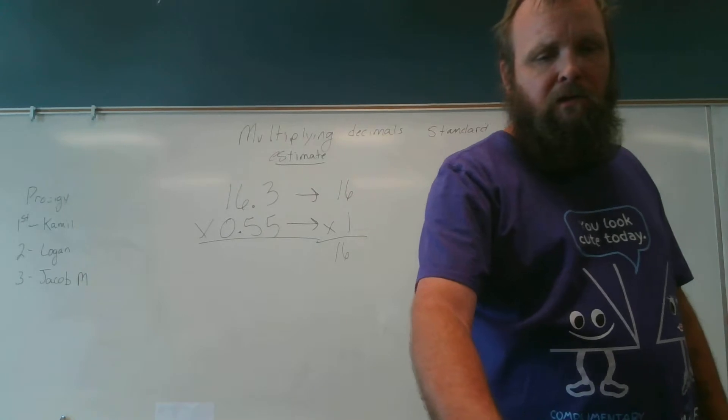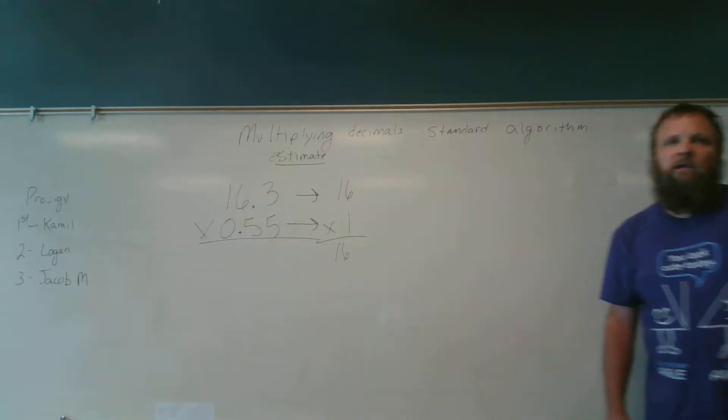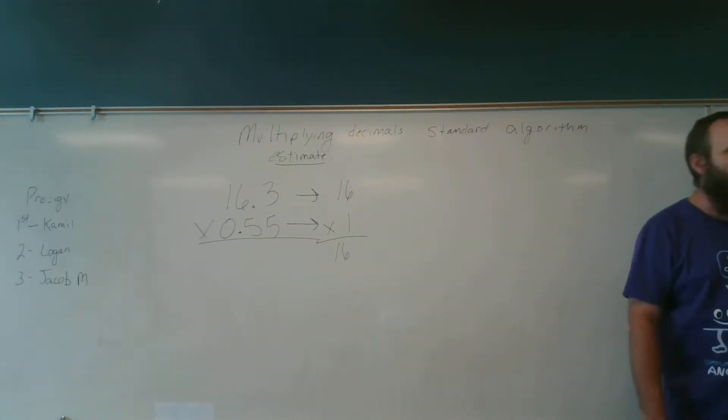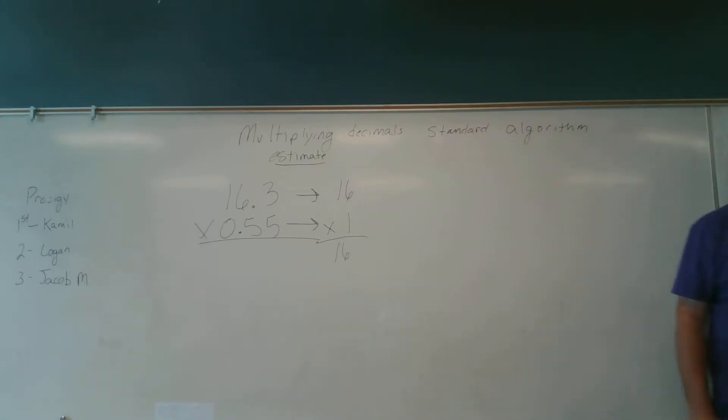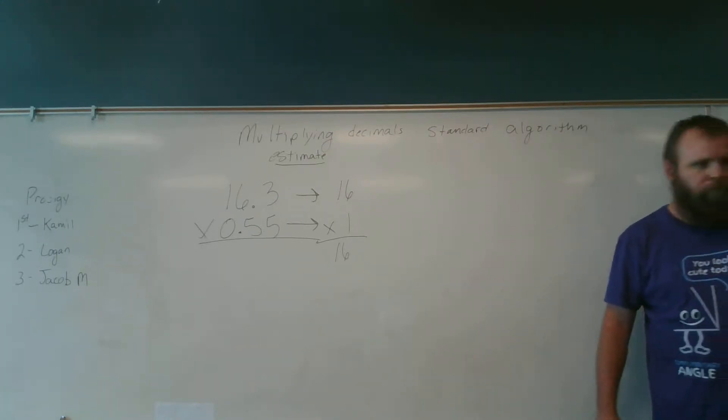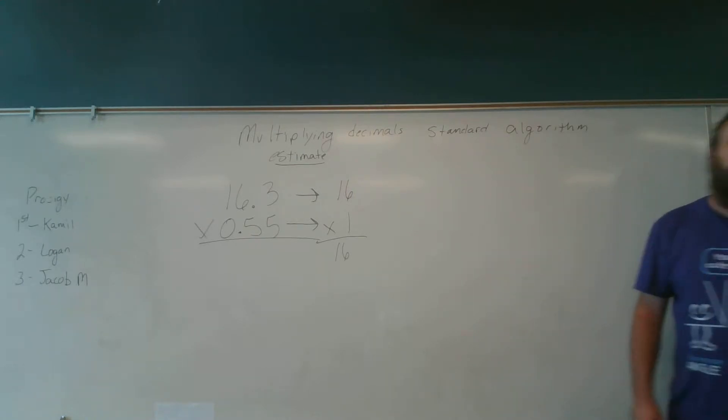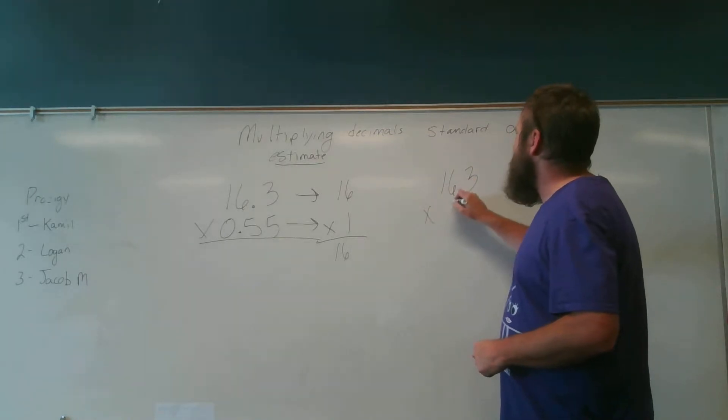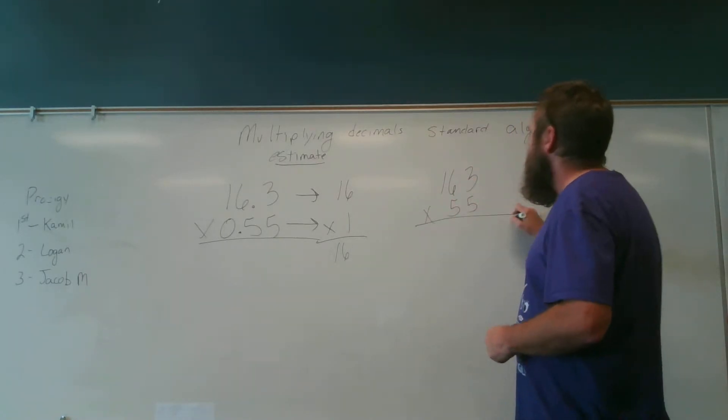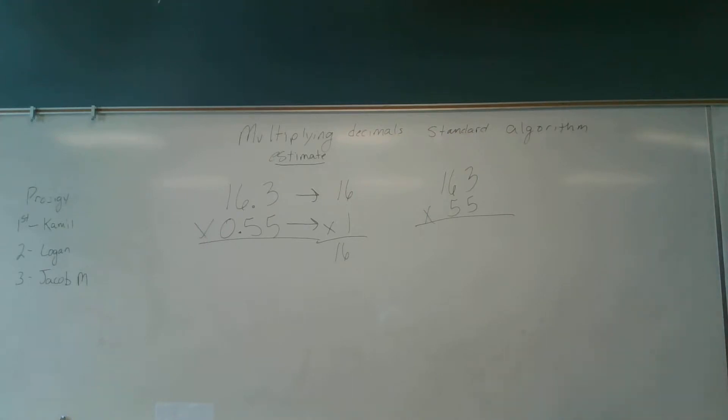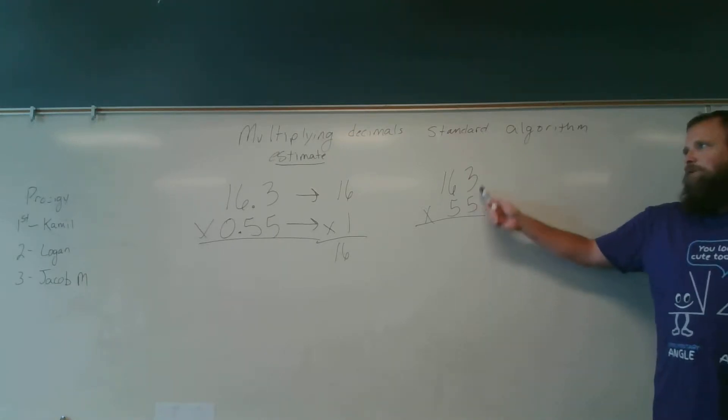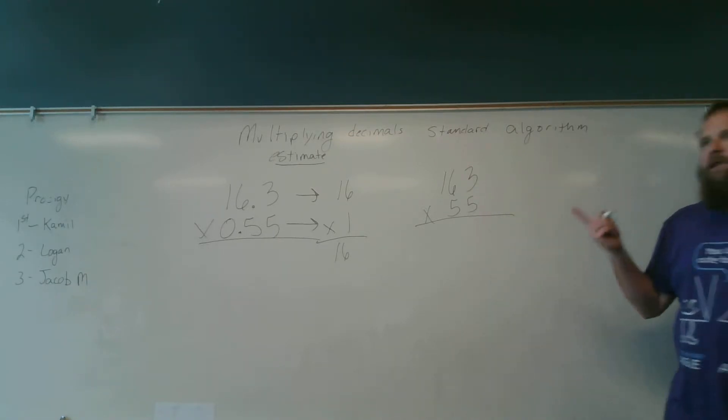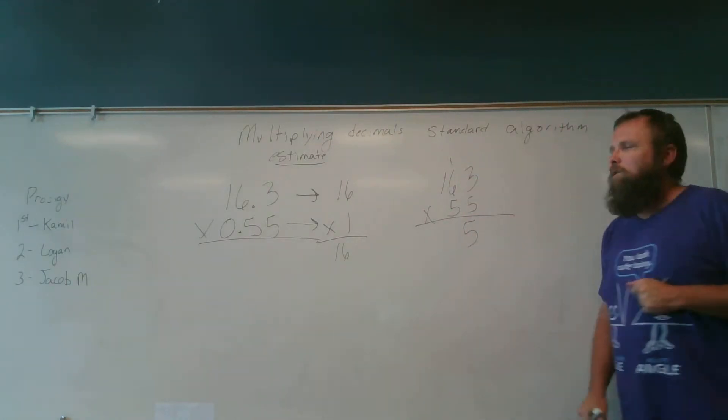Now you still need to do the arithmetic right. Macy, after I estimate, what am I going to do next? I'm going to do the real problem. I'm going to do the real problem, except I'm taking out the decimal points. And so I'm going to multiply it as if there are no decimal points in it. So Macy, what's 5 times 3? 15. I have 15 ones or 5 ones and 1 ten.